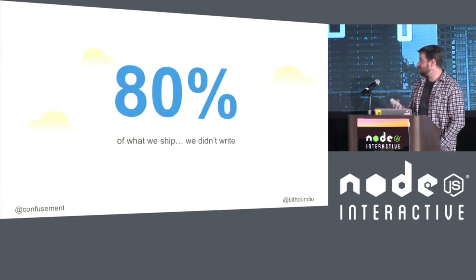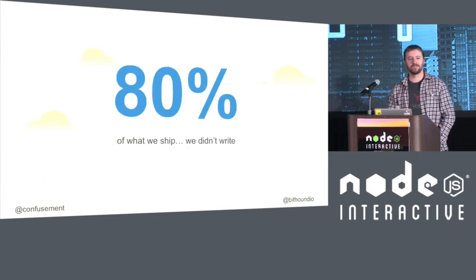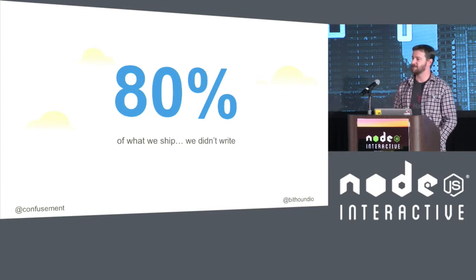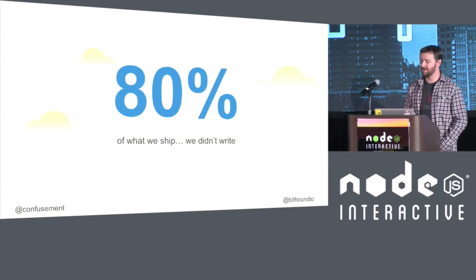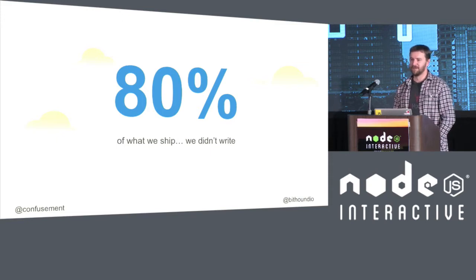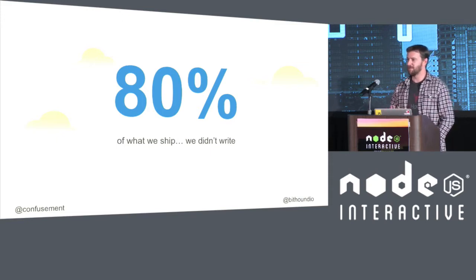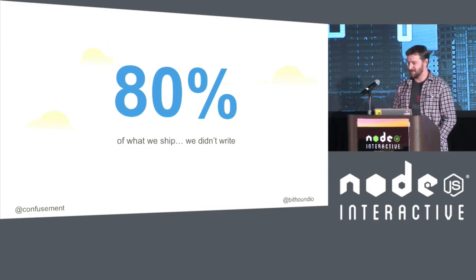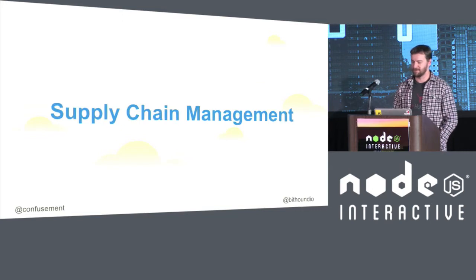It turns out, of the tens of thousands of projects we've analyzed on Bithound, it's actually not uncommon to have about 80% of the code you ship into production not be your own. And this is not a bad thing. And it leads me into what I want to talk about, which is supply chain management.